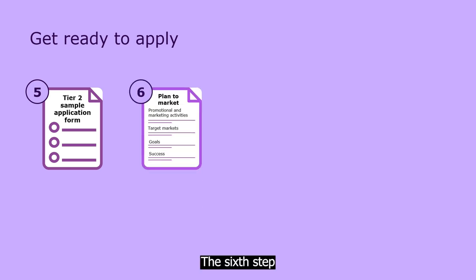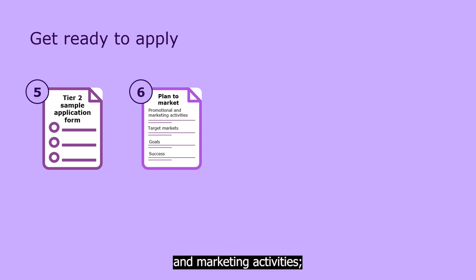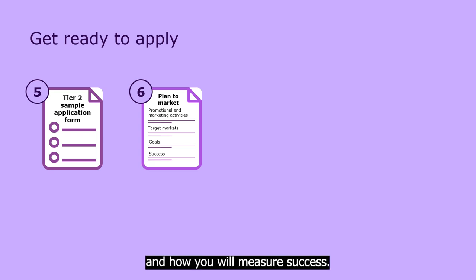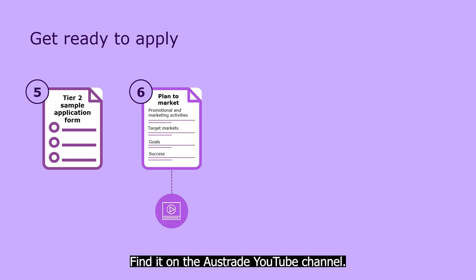The sixth step is to prepare your unique, high-quality plan to market. It must include details such as your planned promotional and marketing activities, your target markets, your goals and how you will measure success. There's another video in this series that shows you how to prepare a high-quality plan to market. Find it on the Austrade YouTube channel.